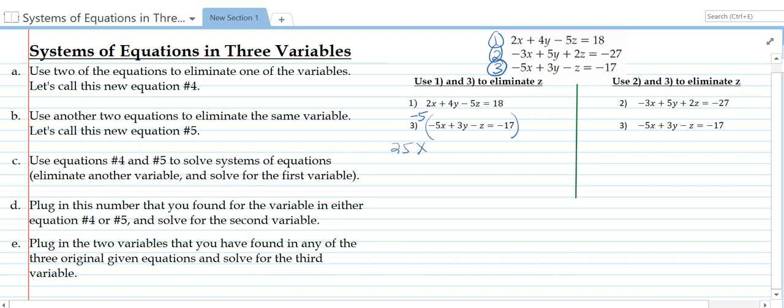So we get 25x minus 15y plus 5z equals 85. I'm going to repeat the first equation down here. So when we add them you will see that the z's eliminate. Now the coefficients of z are 5 and negative 5, so when we add them they cancel. We get 27x minus 11y equals 103. I will call this equation number 4. We're done with step 1.